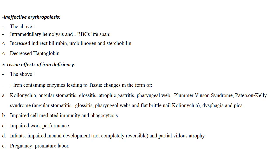The next stage is the stage of ineffective erythropoiesis, in which RBCs are destroyed inside the bone marrow — a process known as intramedullary hemolysis. This stage is manifested in the lab by findings similar to hemolysis: increased indirect bilirubin, increased urobilinogen, increased LDH, and decreased haptoglobin. The last stage is when iron deficiency begins to manifest in the tissues due to defects in iron-containing enzymes. This is a very late stage, as iron in these enzymes is the last iron in the body to become deficient.